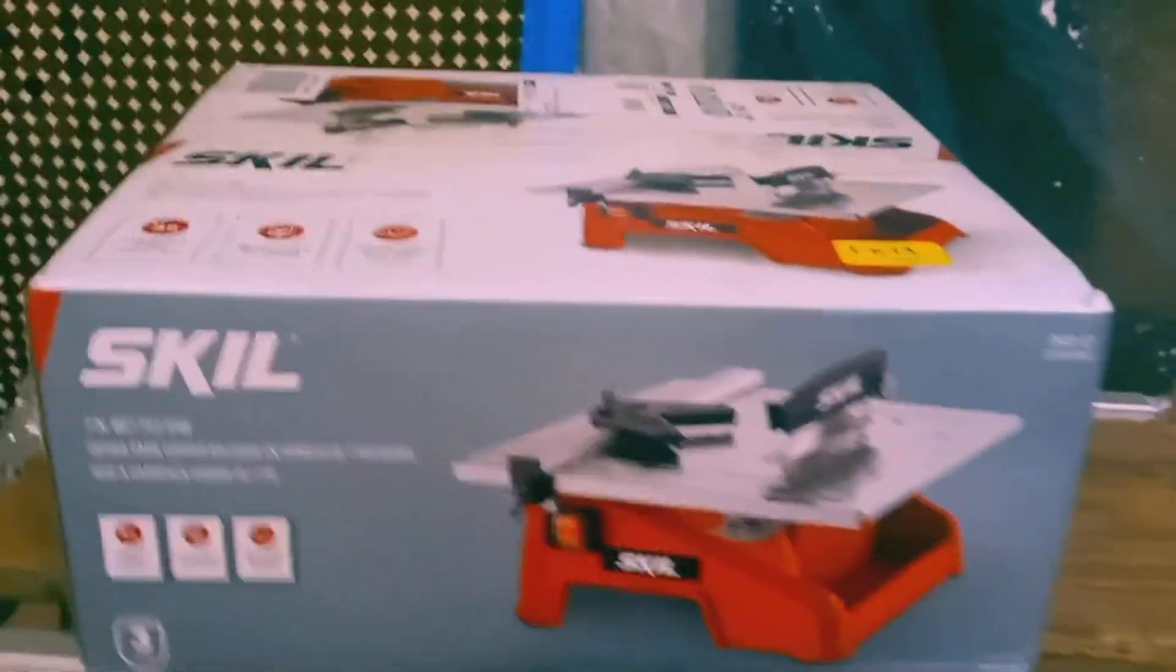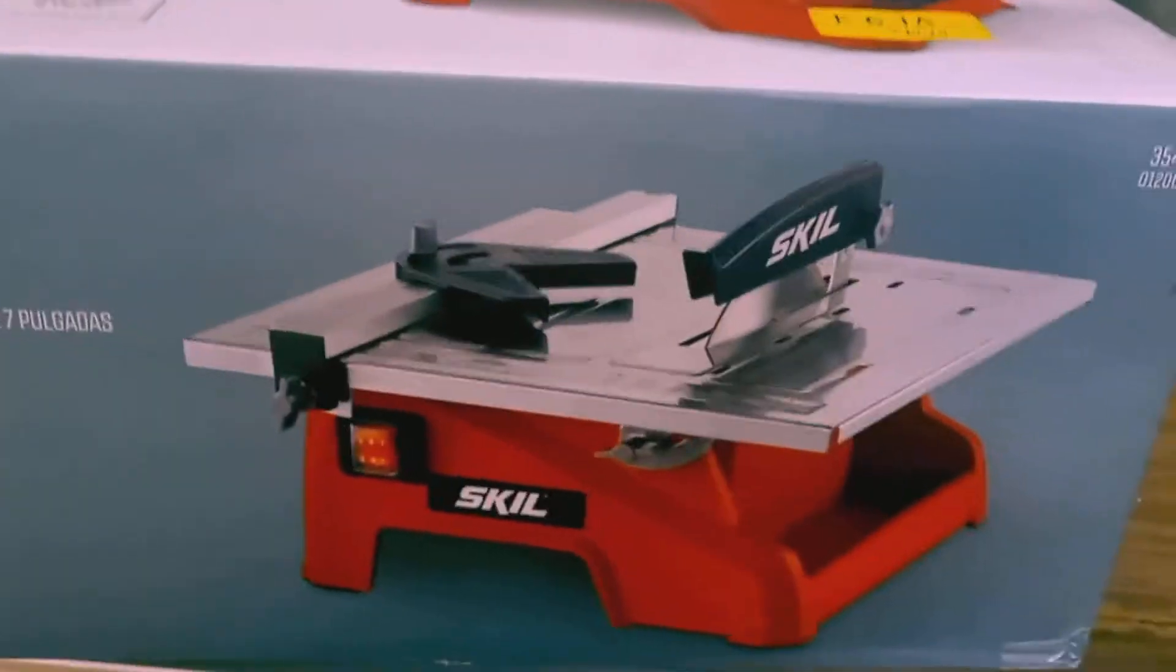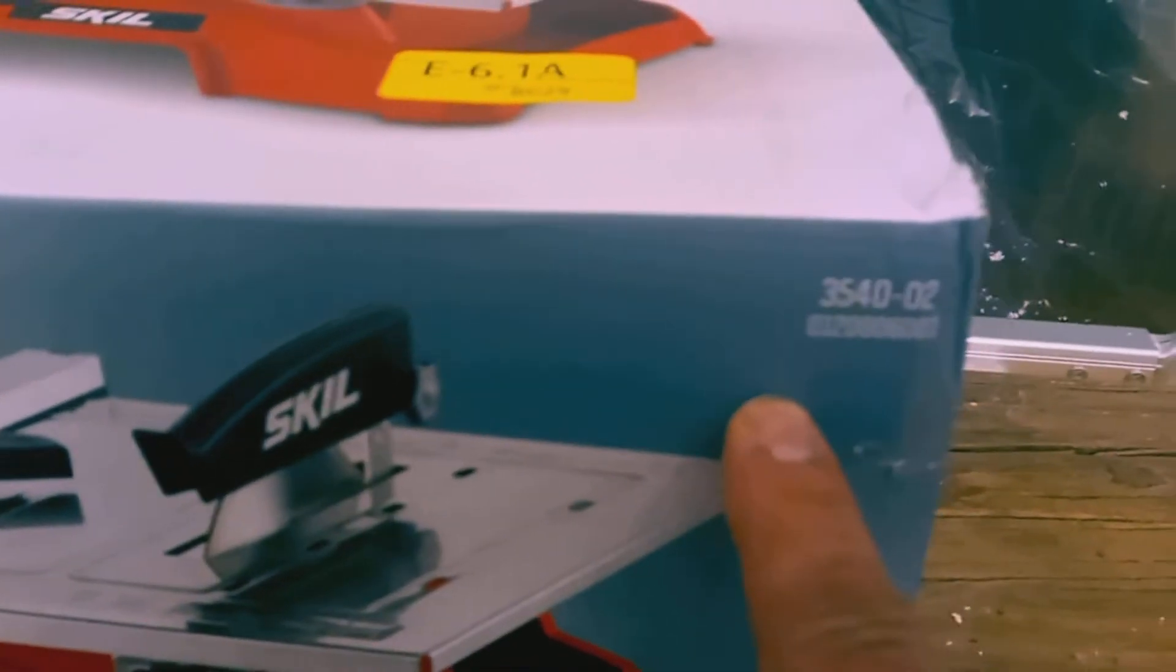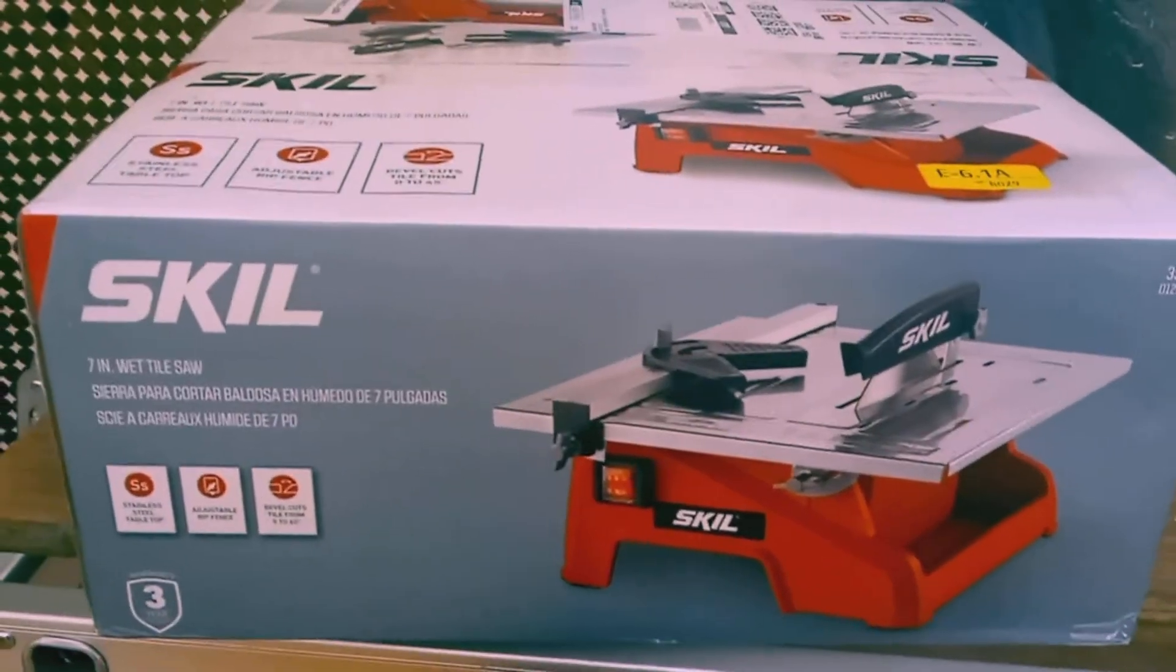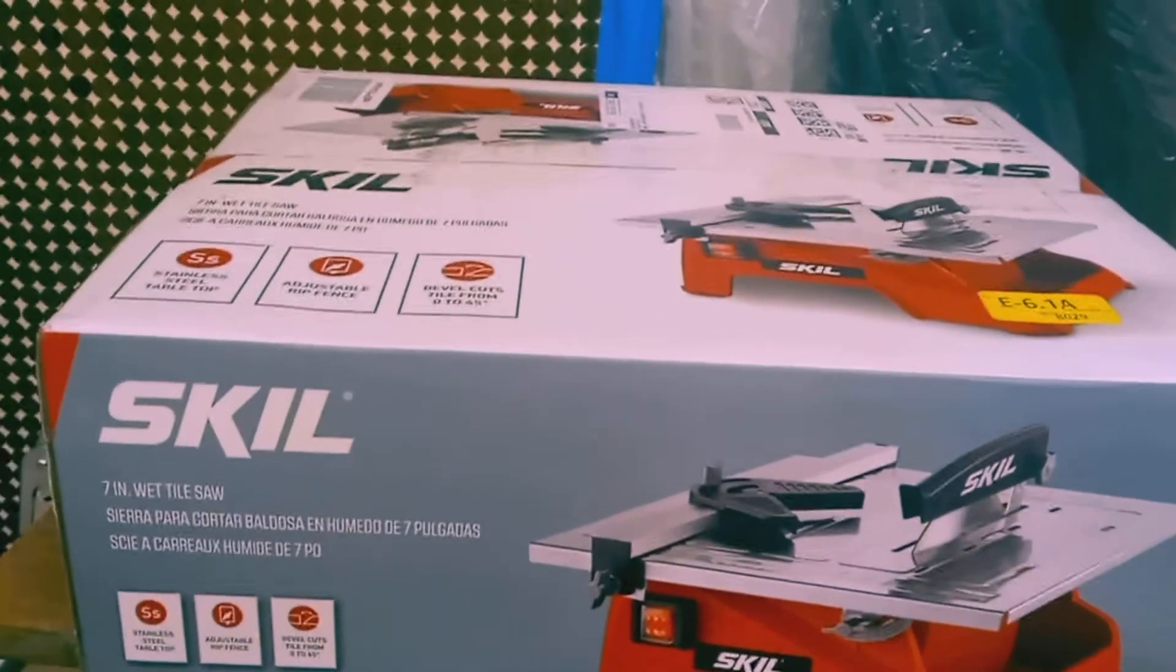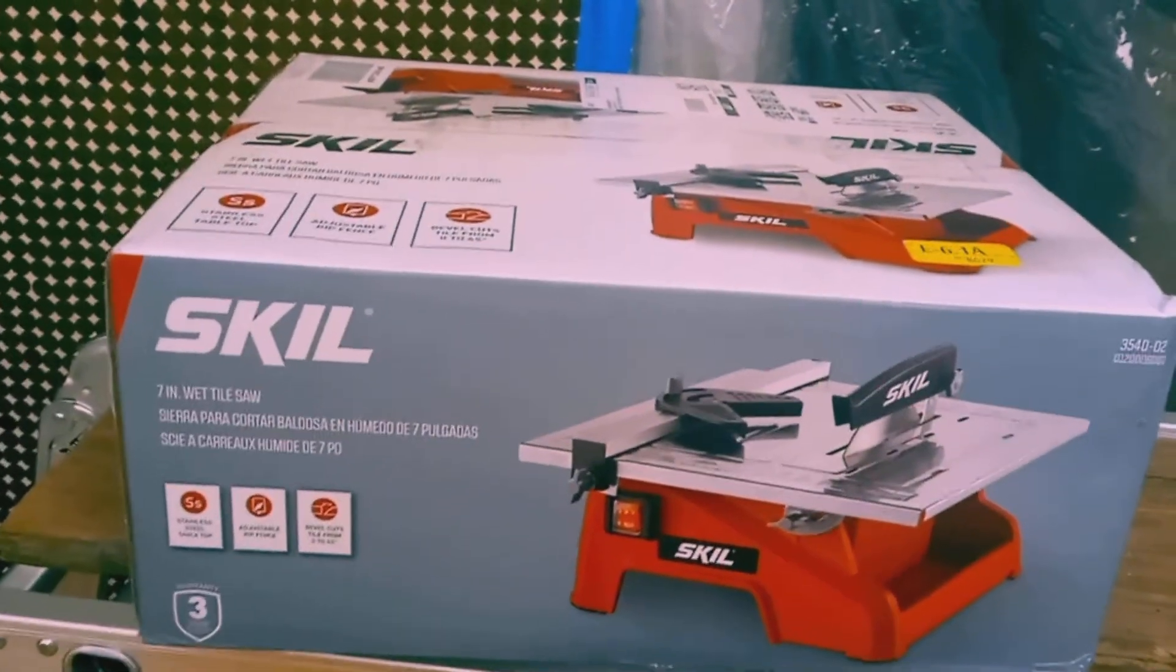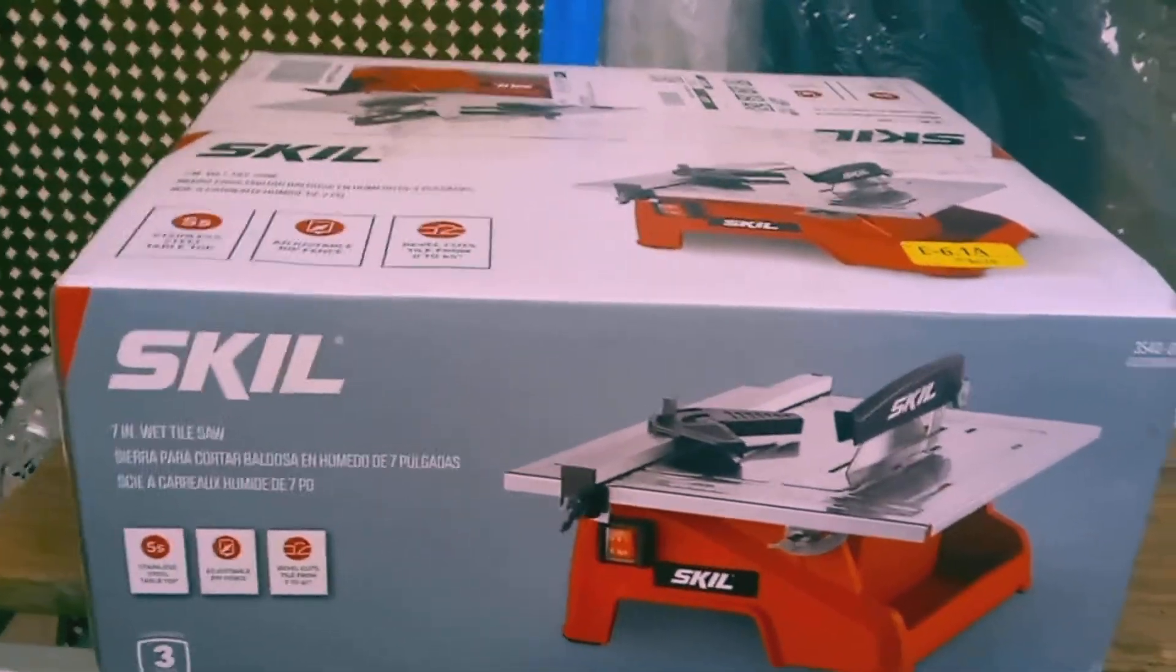Hello YouTube viewers and welcome back to the channel. Today we're doing the unboxing for the SKIL tile saw, 7 inch, model number 3540-02. This is a wet tile saw. We should do the unboxing and see how this thing goes, and I might have another video afterwards to let you know how durable and easy this thing was to use. Don't forget to like, share and subscribe.